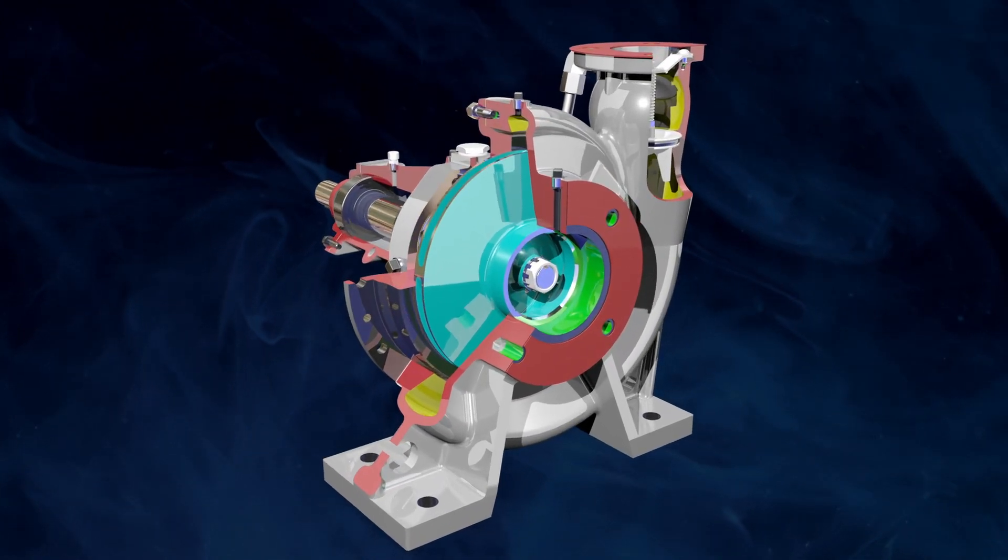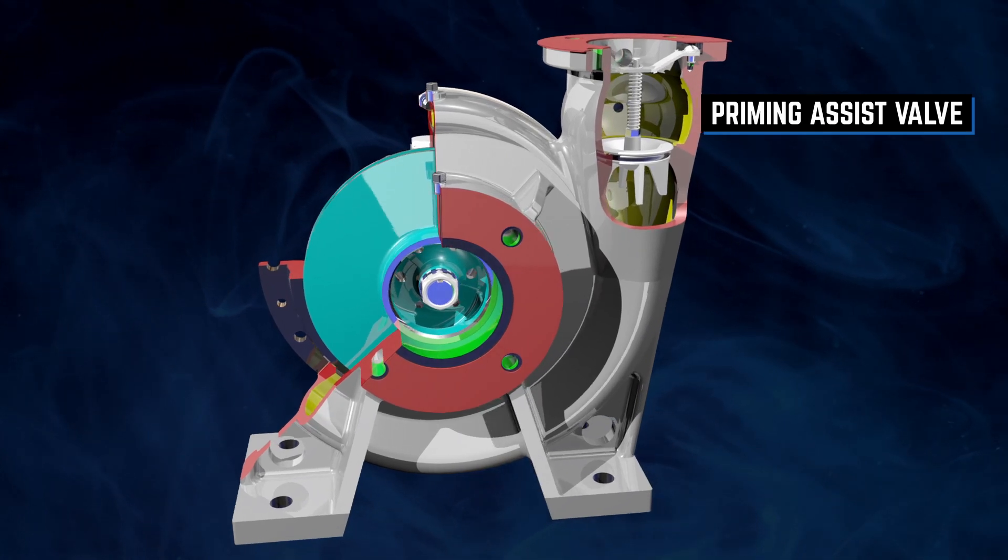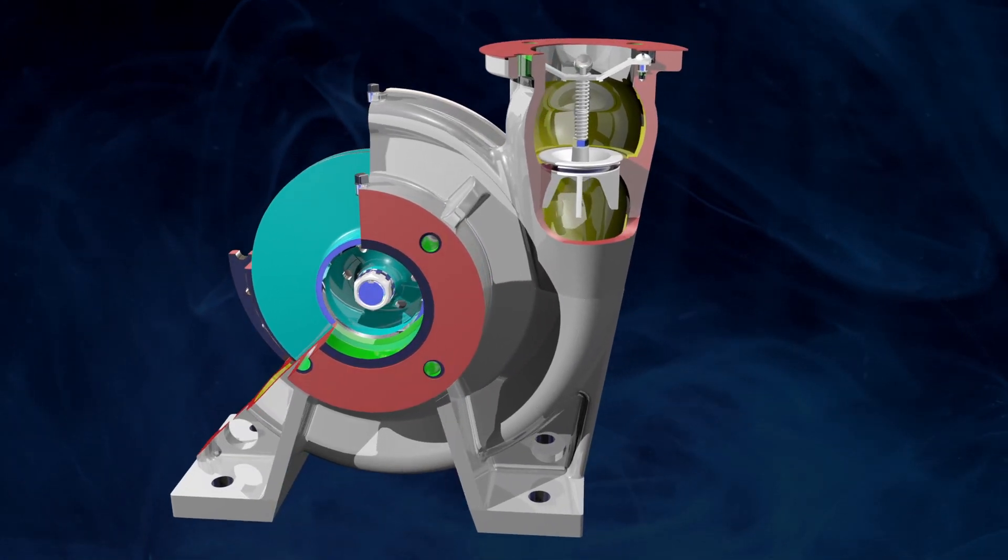Depending on your system's configuration, Rotoprime pumps include a built-in priming assist valve to prevent recirculation of air and vapor during operation.